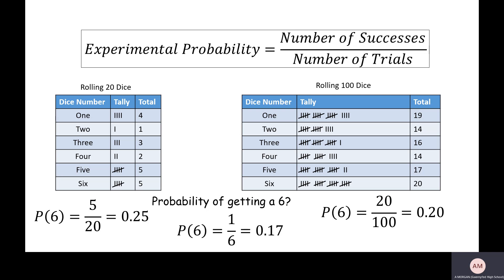But make sure you leave yourself enough time to tally it all up, draw a bar chart, and calculate your experimental probability of getting a six and see how close we can get it.